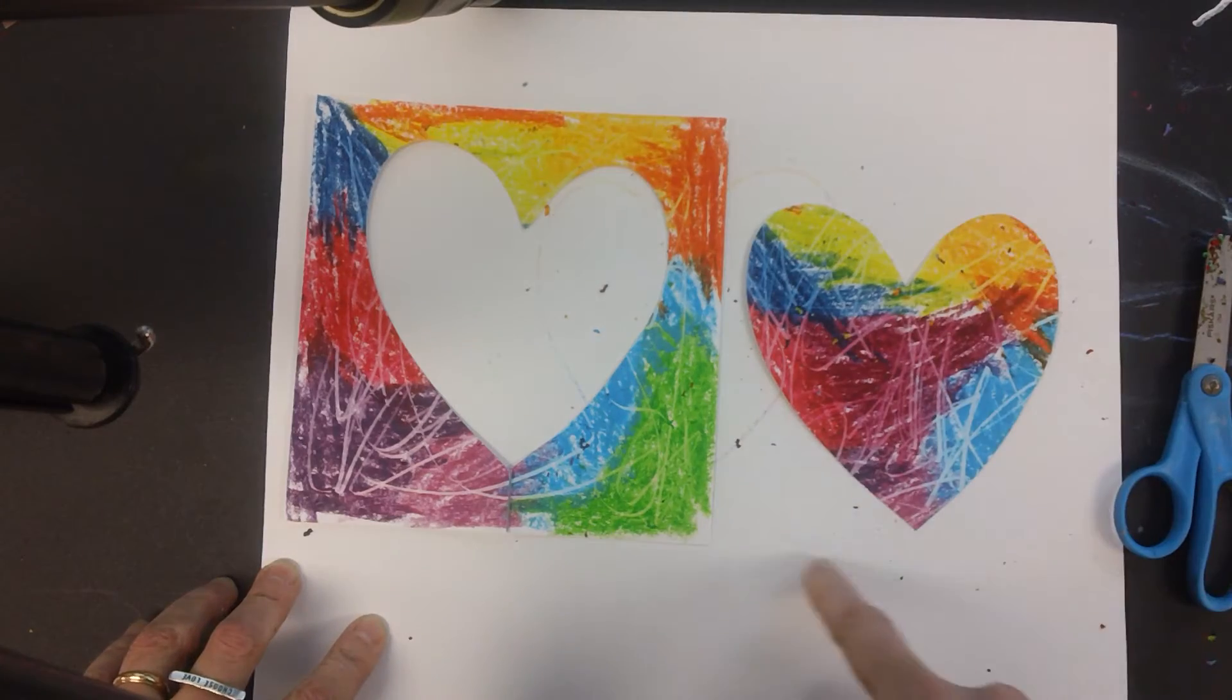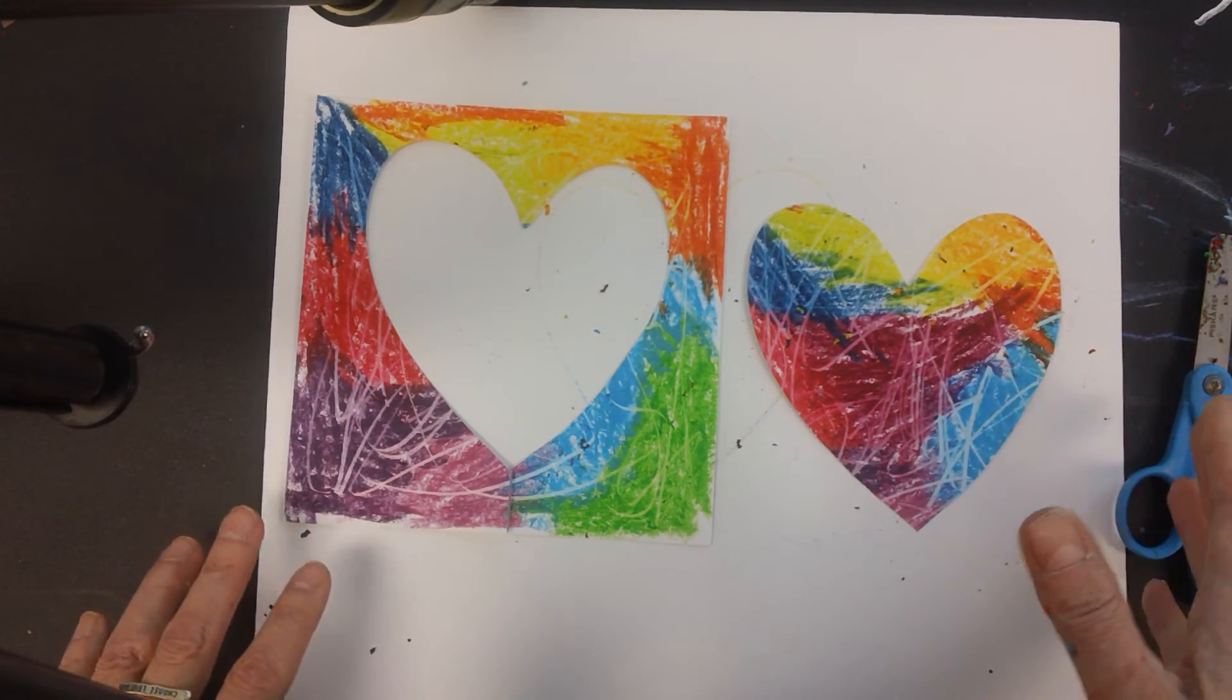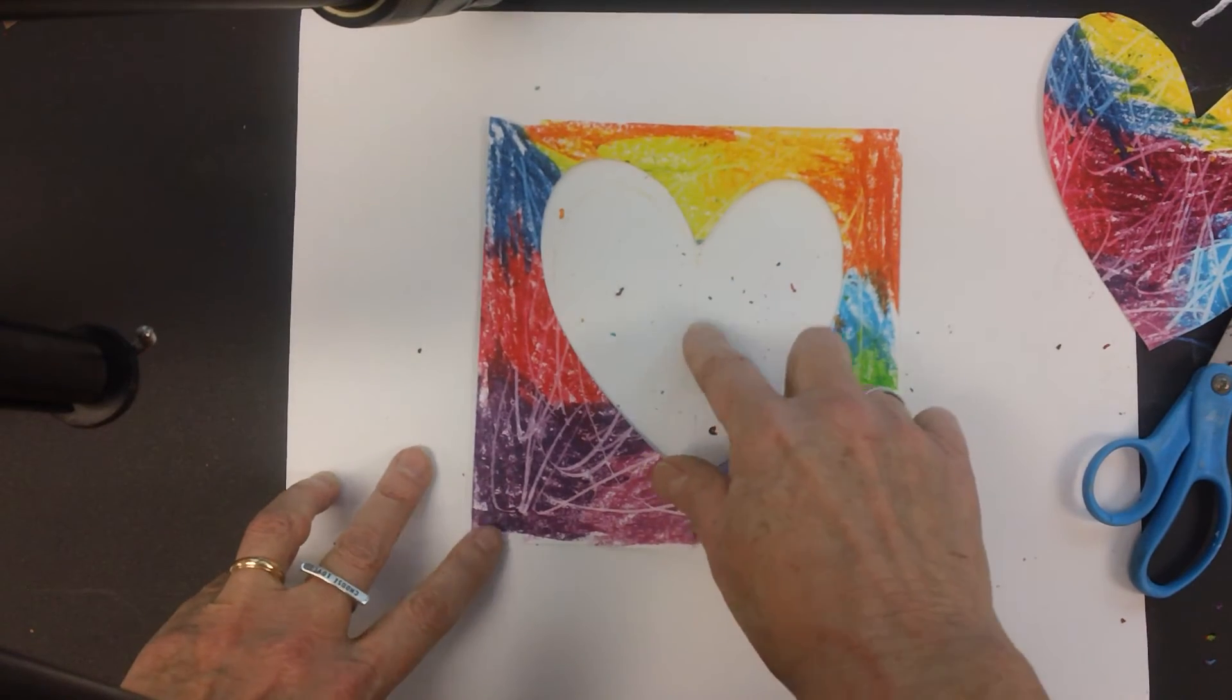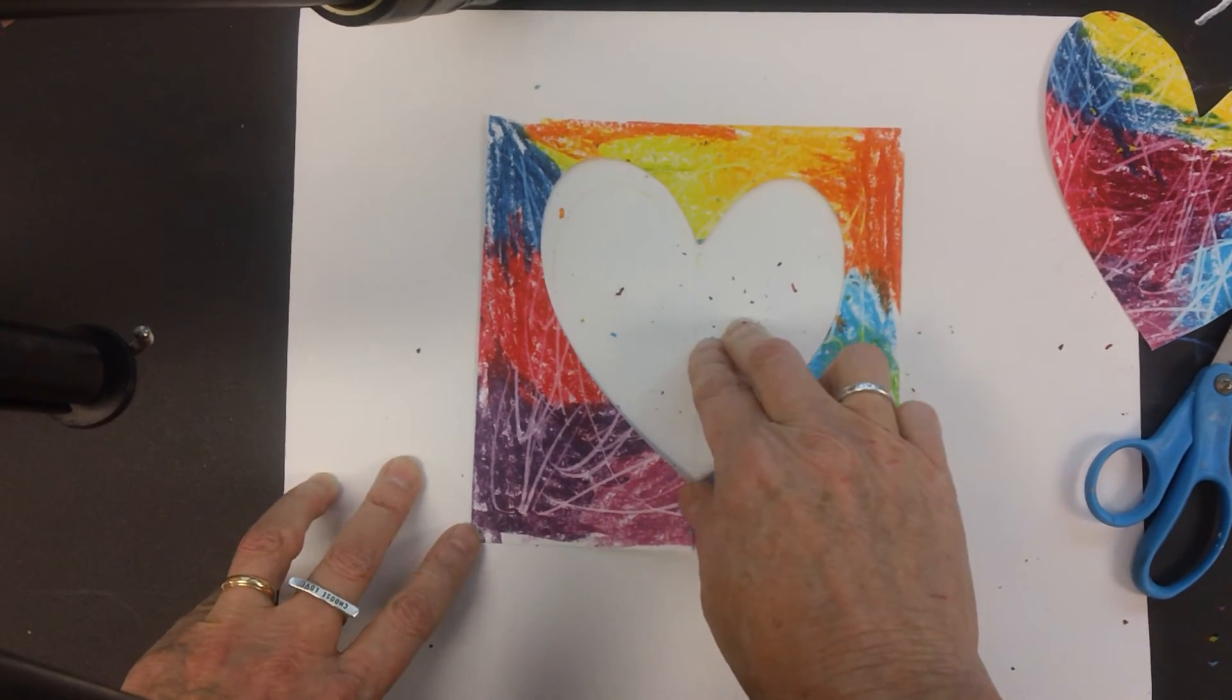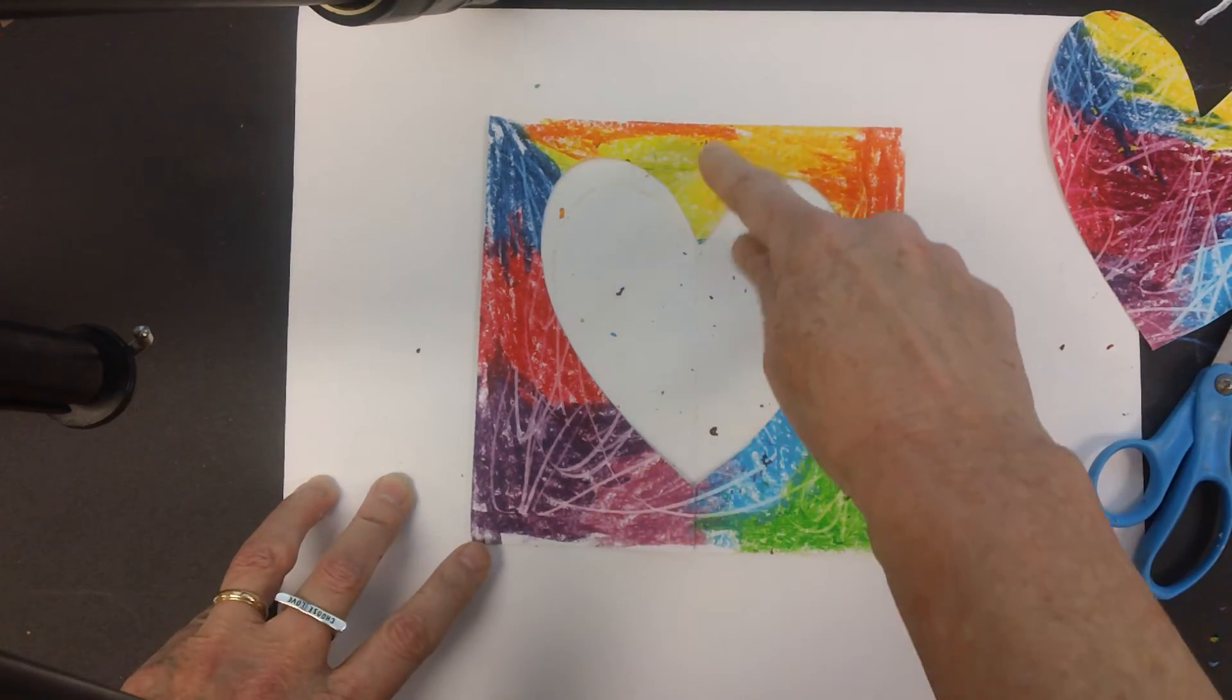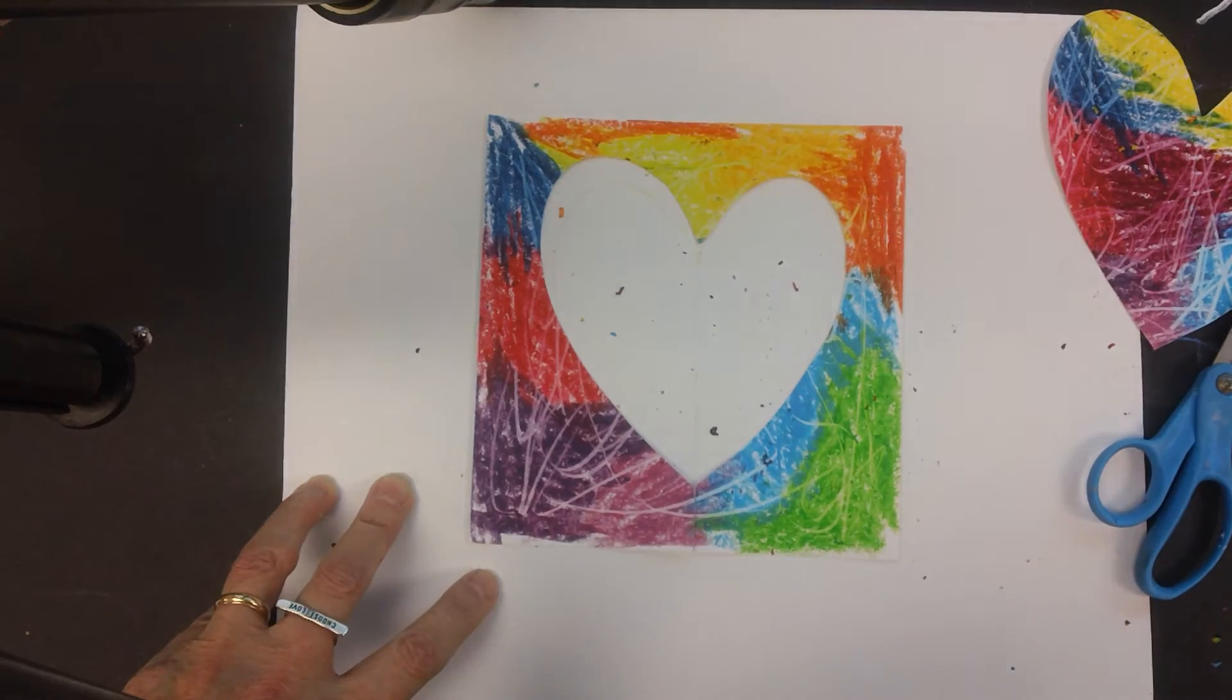The area around it, or the background, would be negative space. This heart is the main focus of the picture. So this is still positive space and then the background is the negative space.